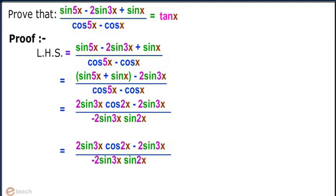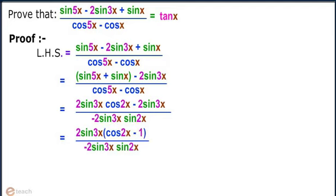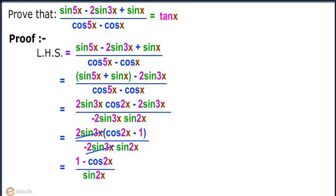On further simplification, we see 2 sin 3x (cos 2x minus 1) divided by (minus 2 sin 3x sin 2x). We cancel 2 sin 3x from the numerator and the denominator, so we get (1 minus cos 2x) divided by sin 2x.